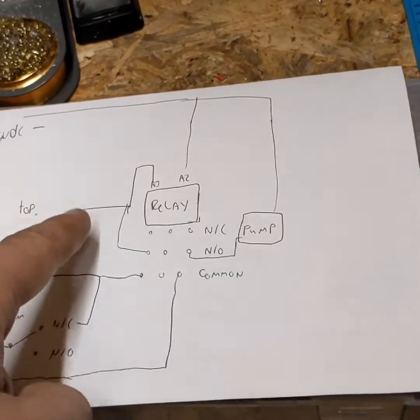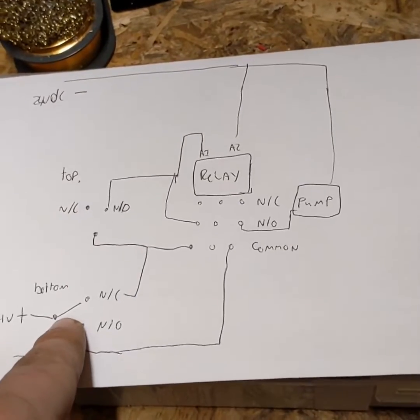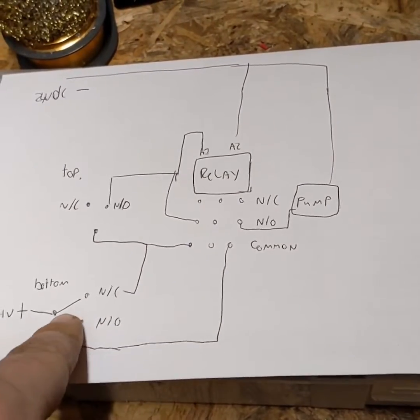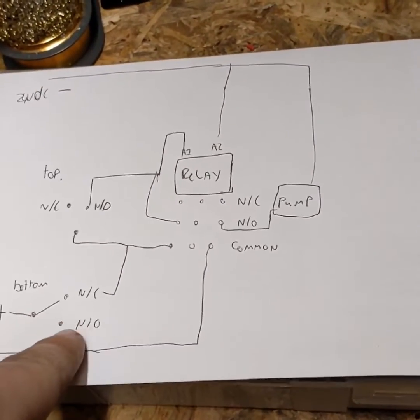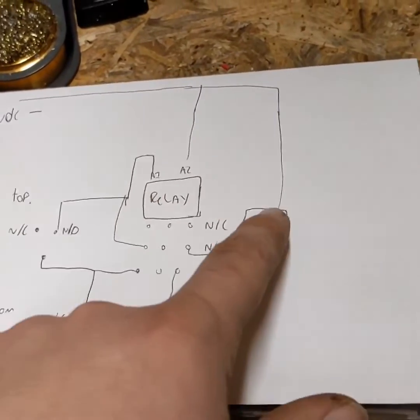So as the tank starts draining down, it comes to the bottom. Once the water level gets lower than the switch, this contact will click over to the normally open, disengaging the relay, turning the pump off,